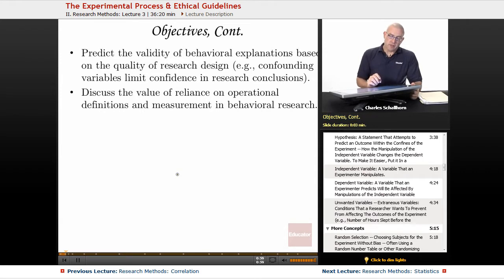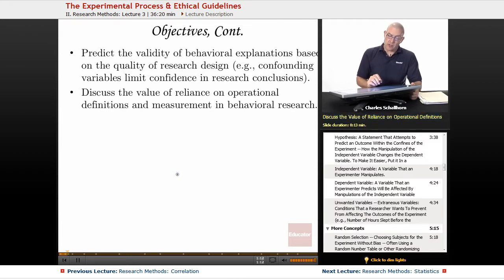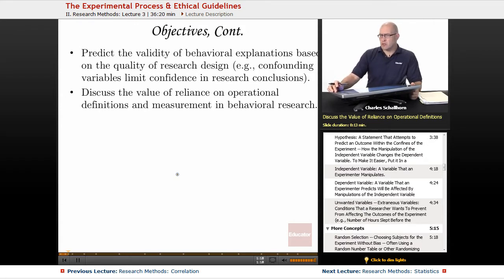For more objectives: predict the validity of behavioral explanations based on the quality of research design. For example, confounding variables limit confidence in research conclusions. And finally, discuss the value of reliance on operational definitions and measurement in behavioral research. That's the big picture overview that the College Board wants you to get out of this entire methodology unit.